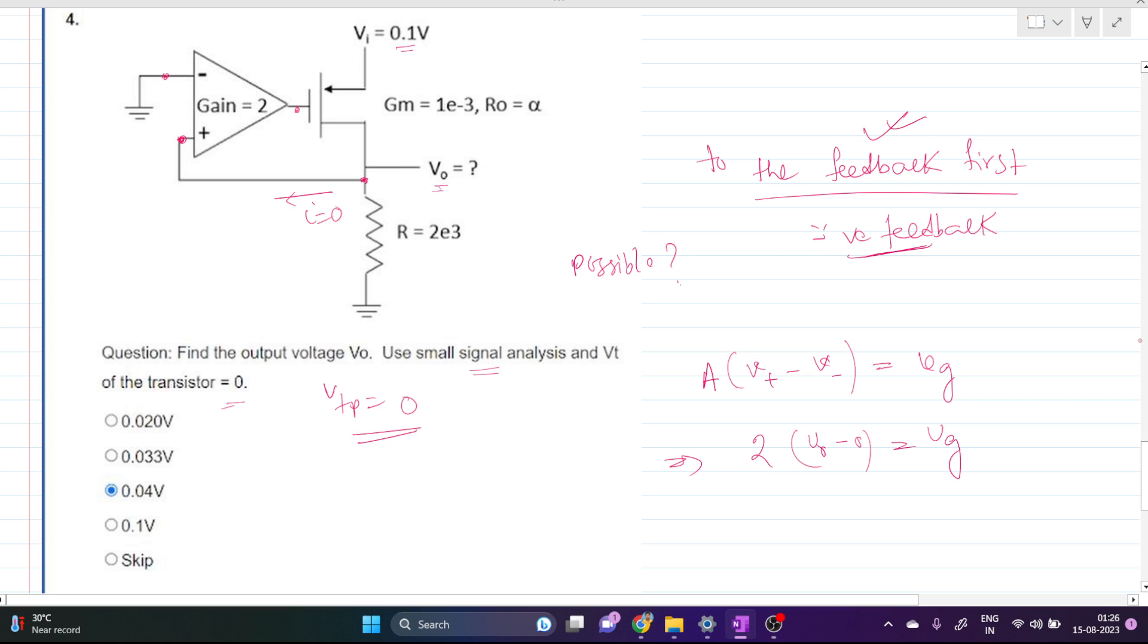The small signal current, like the dependent source, is flowing this way because this is our D and this is our S. So small signal current is g_m times V_gs, which is V_g minus V_s. Your V_s is 0.1 and V_g is nothing but our this value.